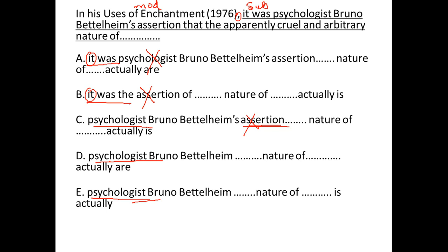So we're left with D and E. Now if you look at the last word, we have 'are' versus 'is' — a singular-plural verb error. The subject here is 'nature of.' Nature is singular, so the verb has to be singular. Eliminate D. Hence, E is the correct answer. Thank you.